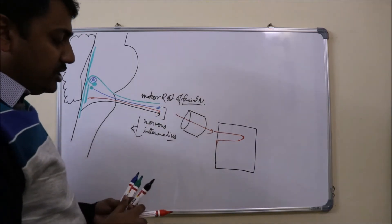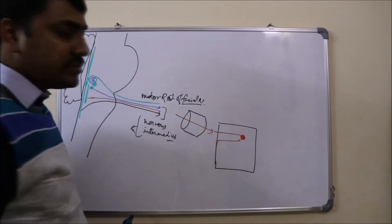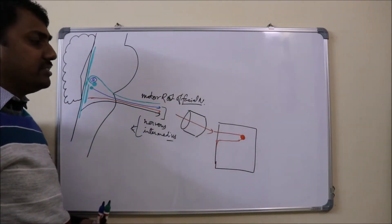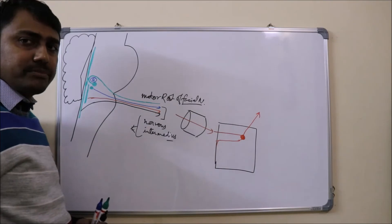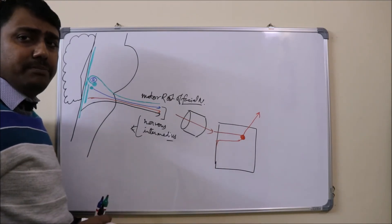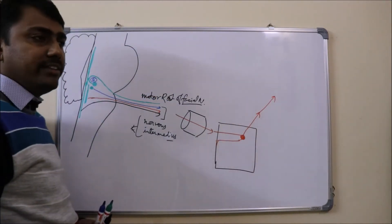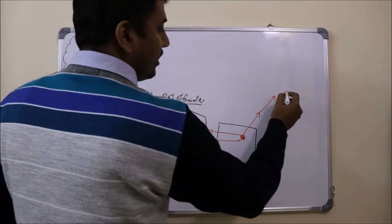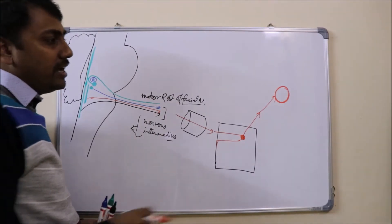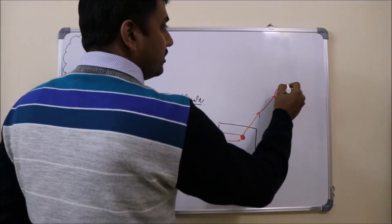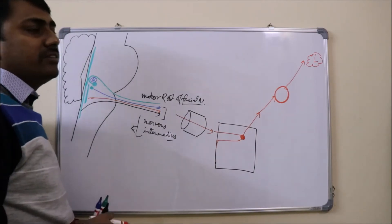At the external genu lies a ganglion known as the geniculate ganglion. From this, a nerve arises known as the greater petrosal nerve, which pierces the roof of the middle ear cavity and joins with the deep petrosal nerve to form the nerve of the pterygoid canal. This nerve relays in the pterygopalatine ganglion, which then supplies the lacrimal gland through branches of the maxillary nerve.